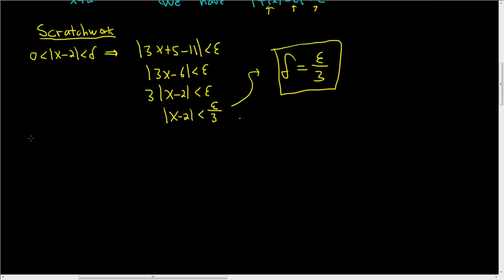Proof. So we'll start by letting epsilon be greater than 0. Let epsilon be greater than 0. Then we have to find the delta, which we already found in the scratch work. So choose delta equal to epsilon over 3.